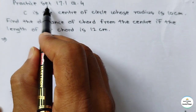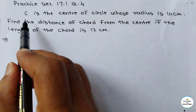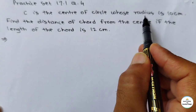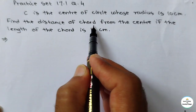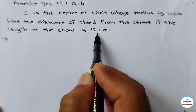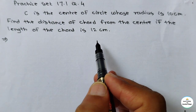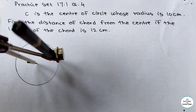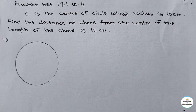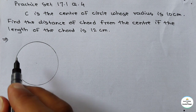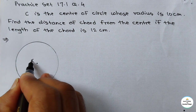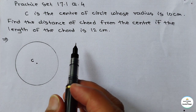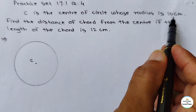See question number 4 of practice set 17.1. The question is: C is the center of the circle whose radius is 10 cm. Find the distance of chord from the center if the length of chord is 12 cm. We will draw a circle of sufficient radius, place the center as C as given in the question. Radius CA is given as 10 cm.